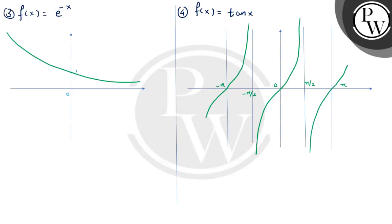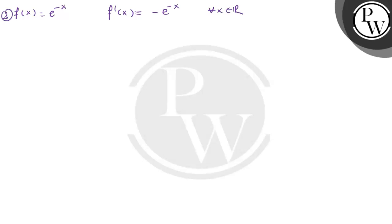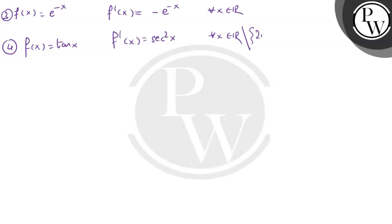For f(x) equals e raised to minus x: exponential functions are infinitely differentiable, and from the graph the function is smooth and continuous. The derivative is f'(x) equals minus e^(minus x) for every x in the set of real numbers. For f(x) equals tan x: the derivative is sec²x, which is defined for every x in the set of real numbers except the set of elements of the form (2n+1)π/2, where n belongs to the integers — which is exactly the domain of tan x. So tan x is differentiable over its entire domain.